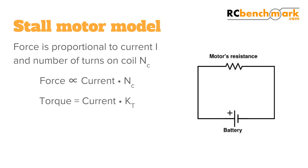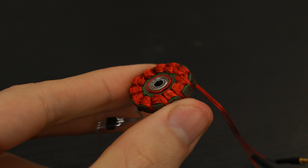That leads to a second problem. You may increase the motor's size instead of using thinner wire, but then the motor is heavier. For example, we rewound this motor to add more turns, which forced us to use thinner wire. The problem was that we needed a higher voltage to run at the same speed, and that the motor was overheating.